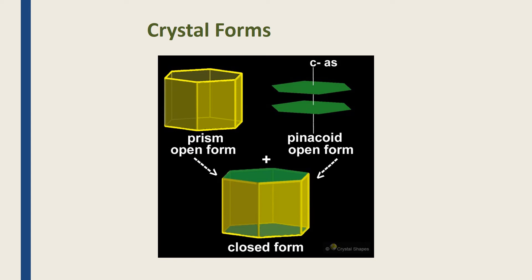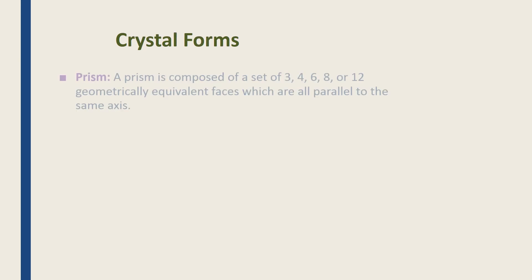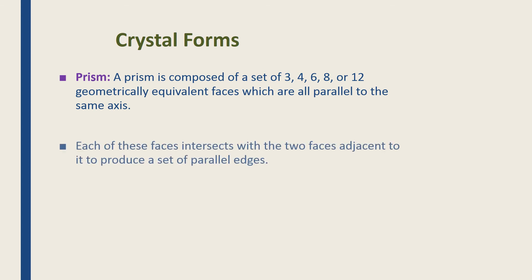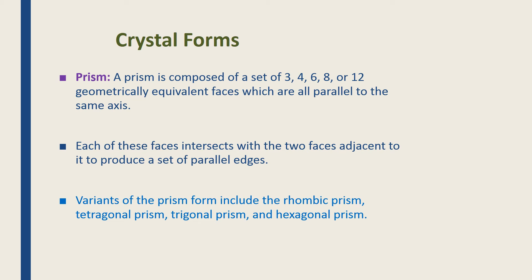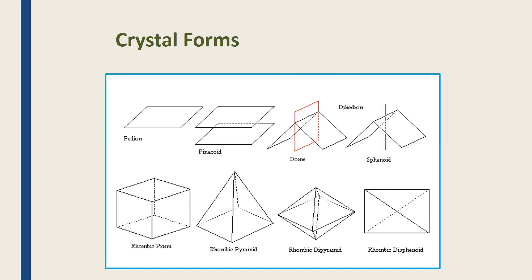When you add them together, you get a closed form of a prism. A prism is composed of three, four, six, eight, or twelve geometrically equivalent faces, all parallel to the same axis. Each face intersects with two adjacent faces to produce a set of parallel edges. We can find this in rhombic, tetragonal, trigonal, and hexagonal prisms — all open crystal forms.